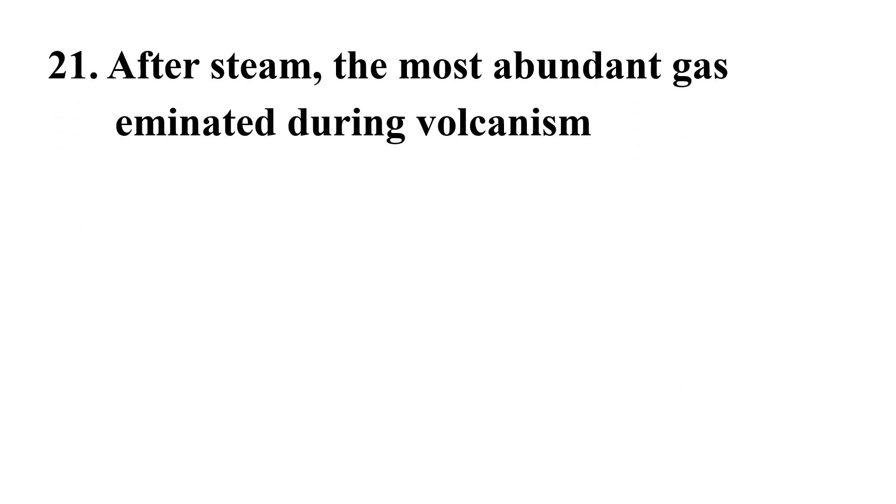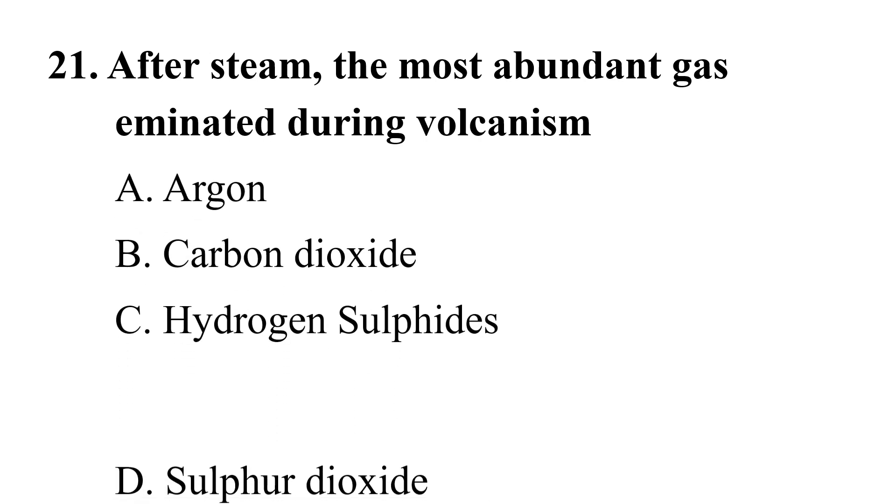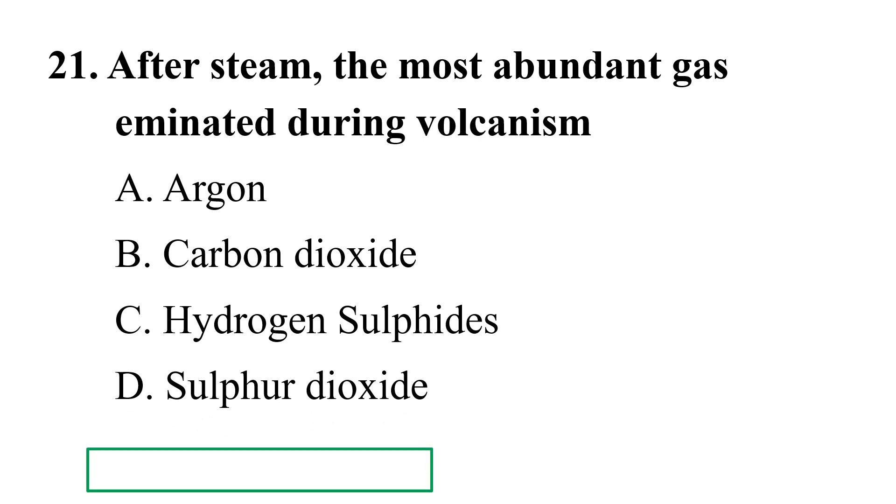21st question: after steam the most abundant gas emanated during volcanism. A Argon, B Carbon dioxide, C Hydrogen sulfide, D Sulfur dioxide. The correct answer is B Carbon dioxide.